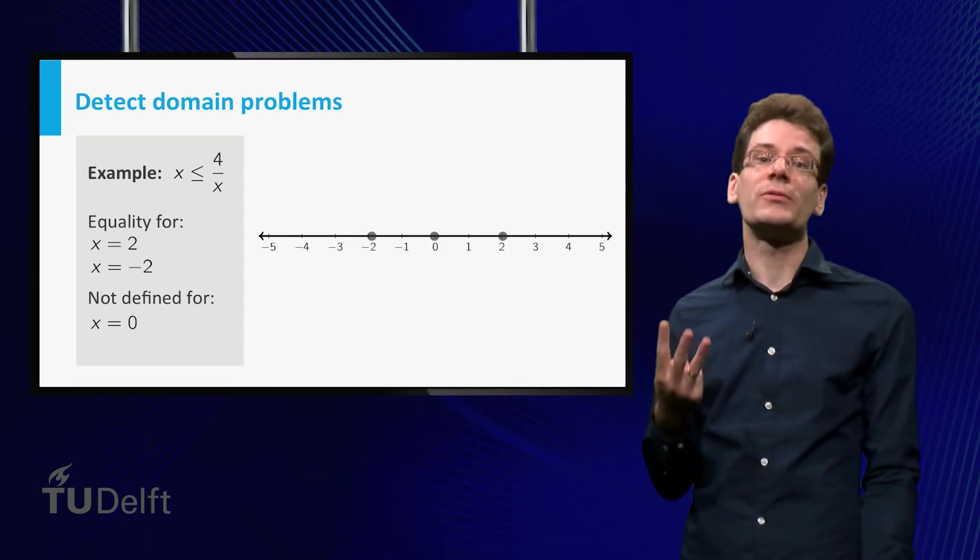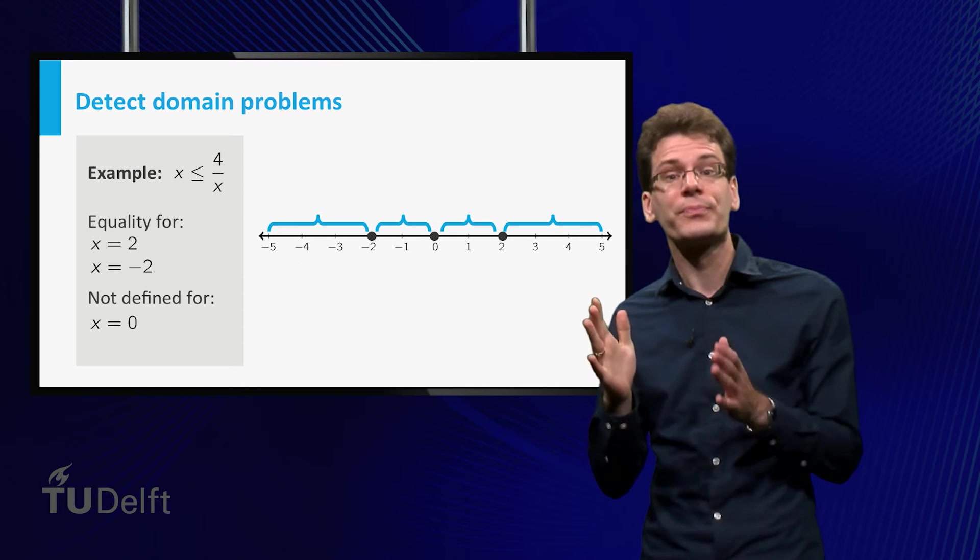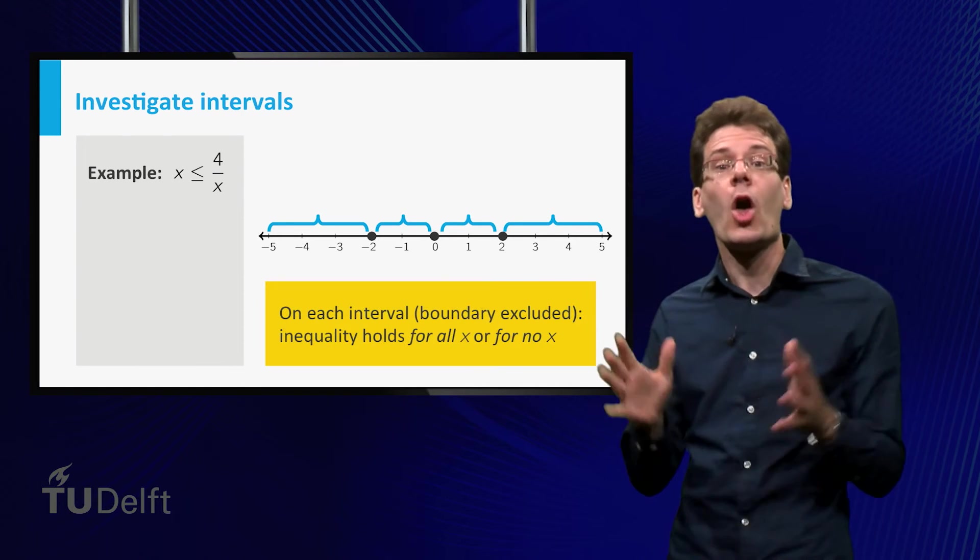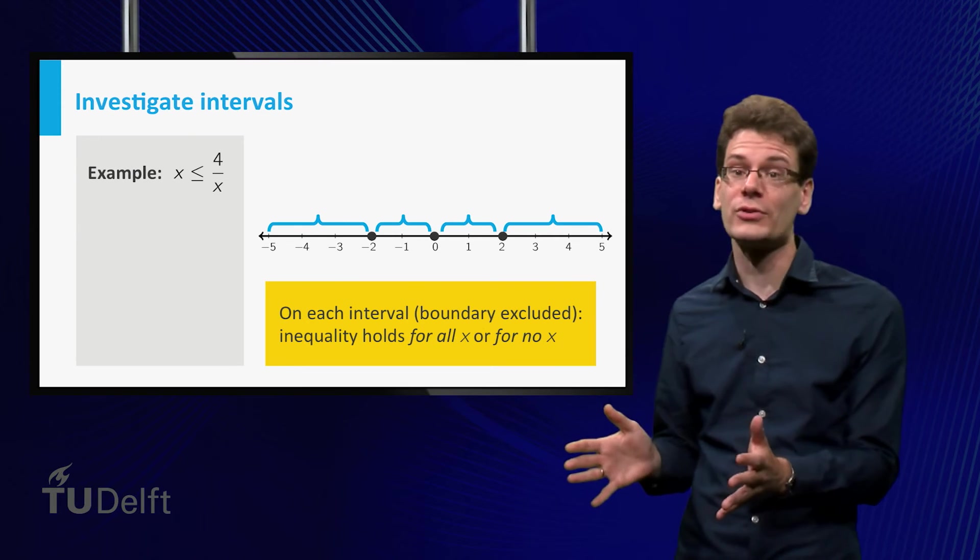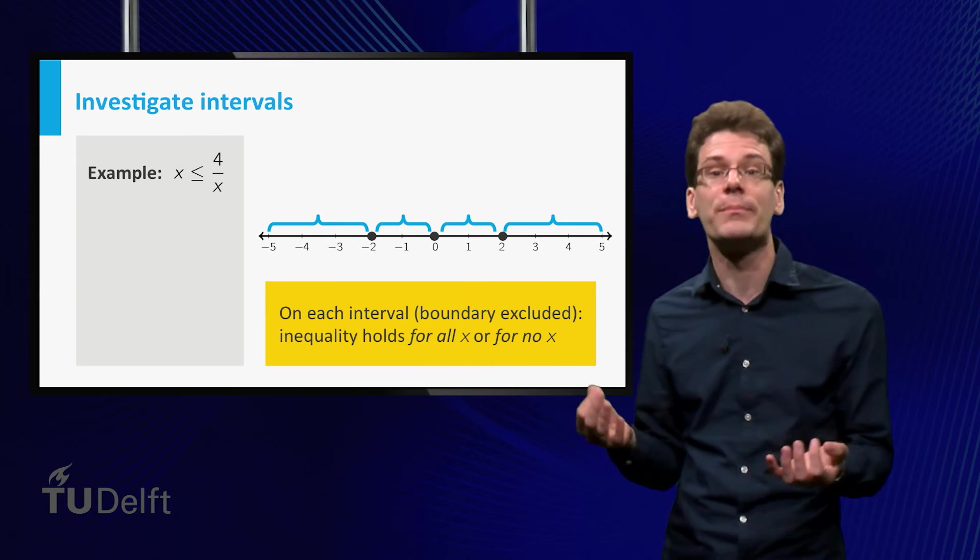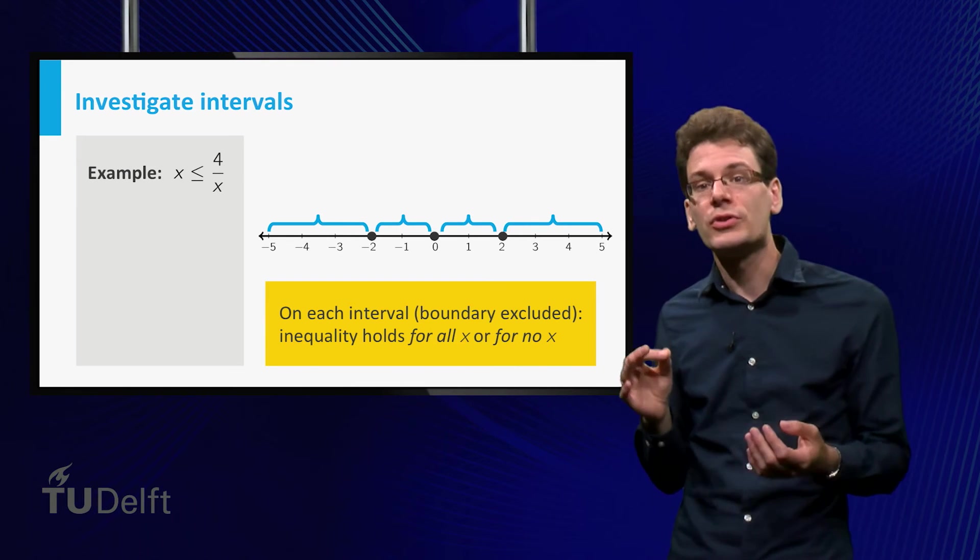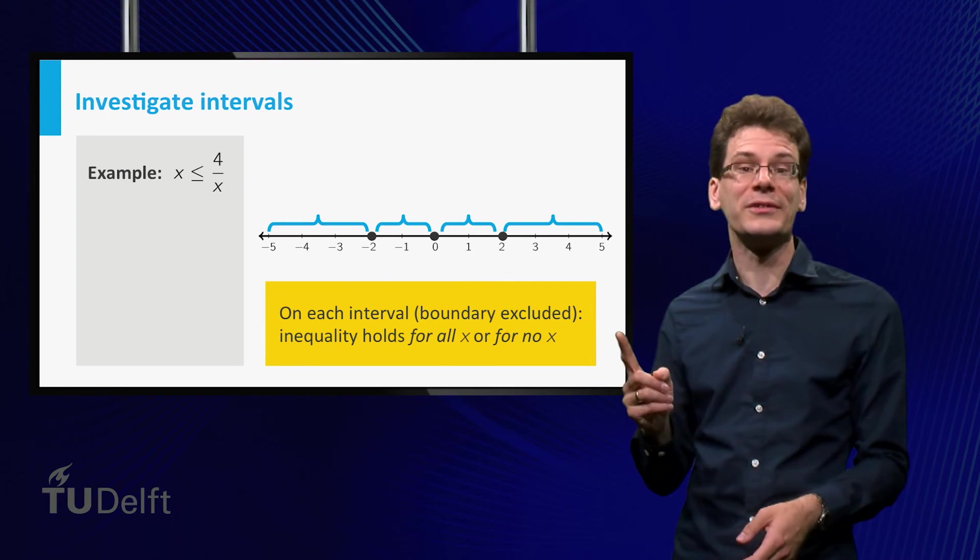The three points that we have found divide the real line into four intervals. Now the following is important. On each interval, the inequality holds either for all values of x or for no values of x, except possibly at the boundary points. So to check on each interval whether the inequality holds, it suffices to look at one point.